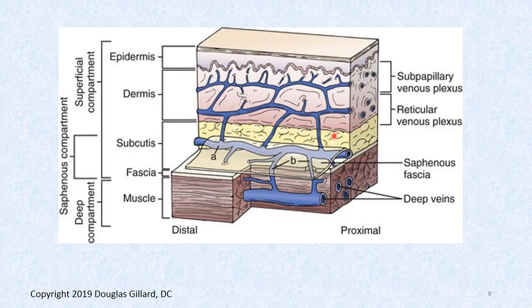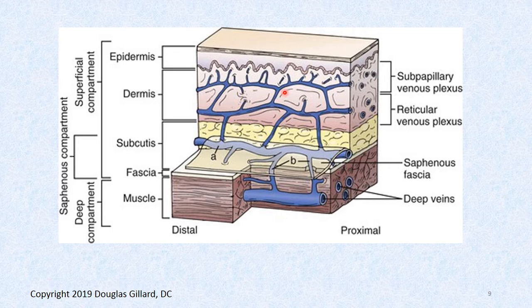Just to remind you, there's the epidermis — no blood there. There is a venous system here as well, same as the arterial system. There's a reticular system that feeds the deep system. Blood is drained out of the superficial compartment, goes into a perforator system, and is transferred down to the deep. We'll talk about that more in class.